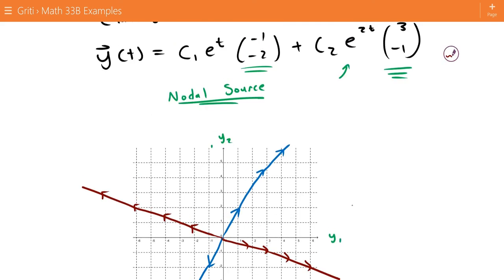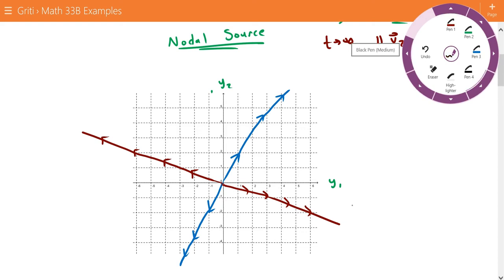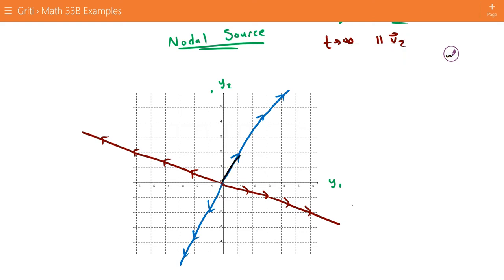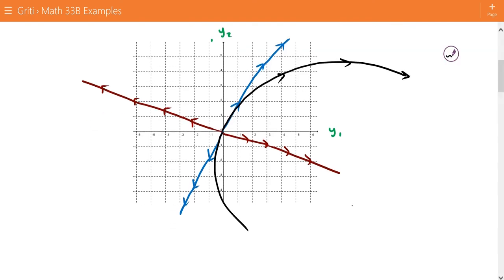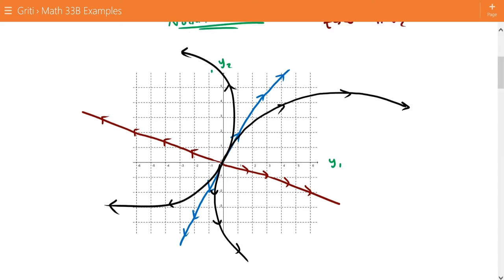And since we said this is the more positive eigenvalue as t approaches infinity, we're going to be parallel to v2. So we're going to move out to v2 as we go to infinity. And that looks like this. We're starting out parallel to v1, and moving parallel to v2. And same here. And that is it.